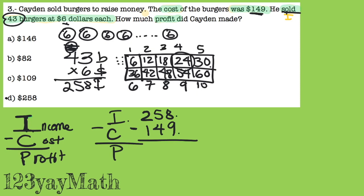So 8 — if I have 8, can I take away 9? No, I don't have enough. So I'm going to go to my neighbor and borrow. Give me 10 — so this 5 becomes a 4, and this 8 becomes 18. 18 minus 9 is 9. 4 minus 4 is 0. And 2 minus 1 is 1. So Kaden made $109 profit.